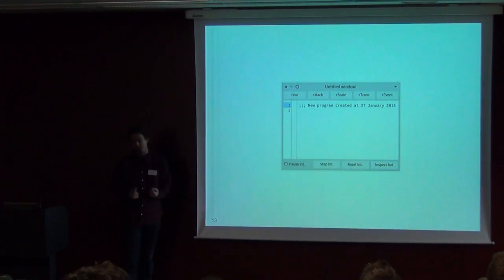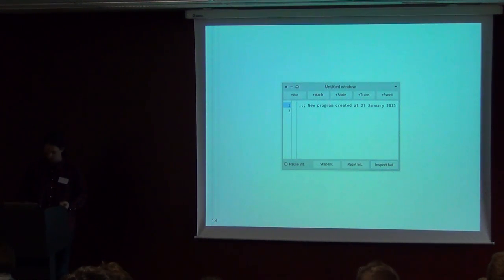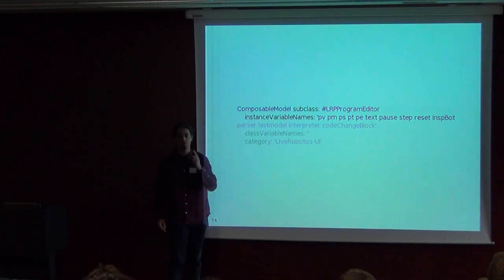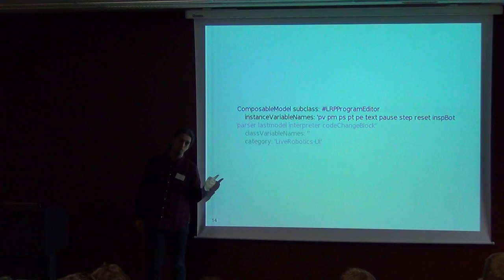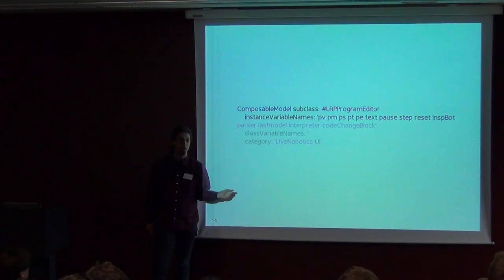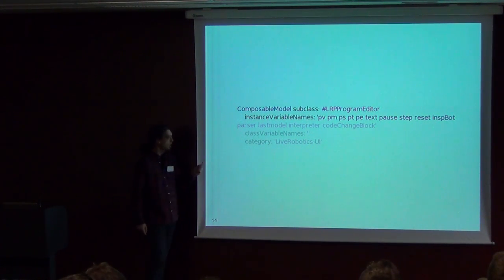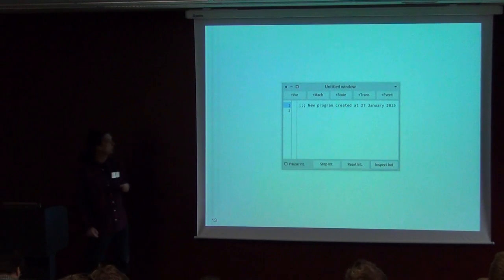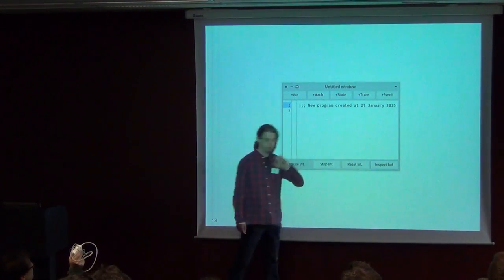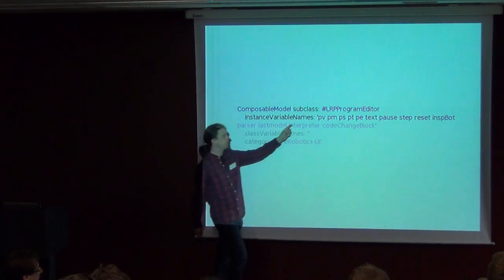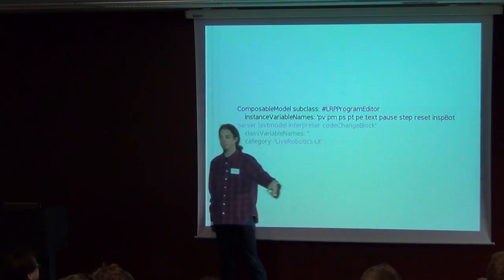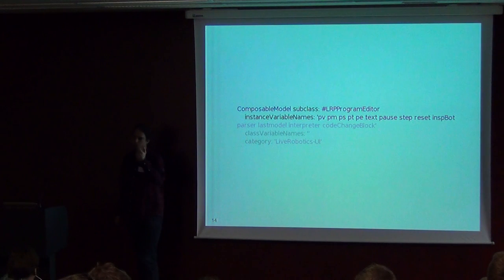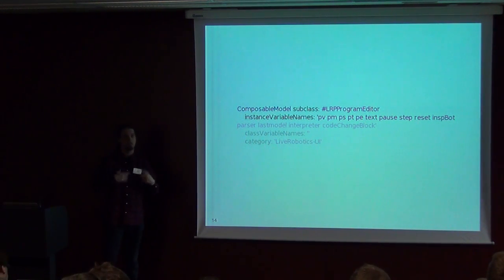How do I build a user interface? What's the first step? The first step is defining the class. If you build a user interface in Spec, you subclass ComposableModel. This means if you want to find examples, you find all subclasses of ComposableModel — you find all the Spec user interfaces in your image. Second step: you need to define instance variables for each widget in your user interface. I have one, two, three, four, five, six, seven, eight, nine, ten — those ten widgets. You need to have instance variables for each widget that will be inside your user interface, and you need to generate the accessors for that.